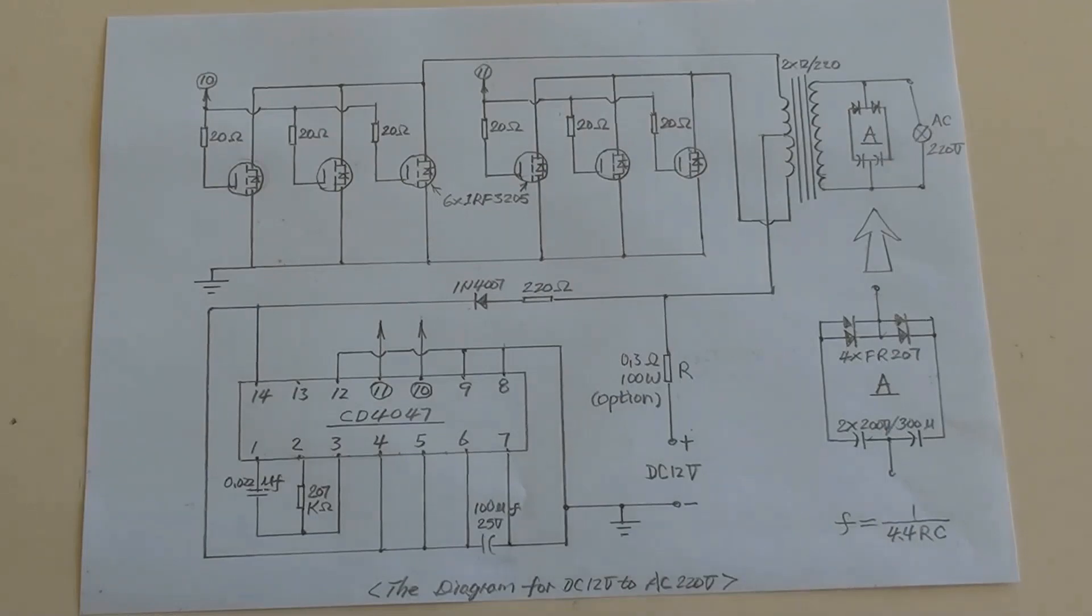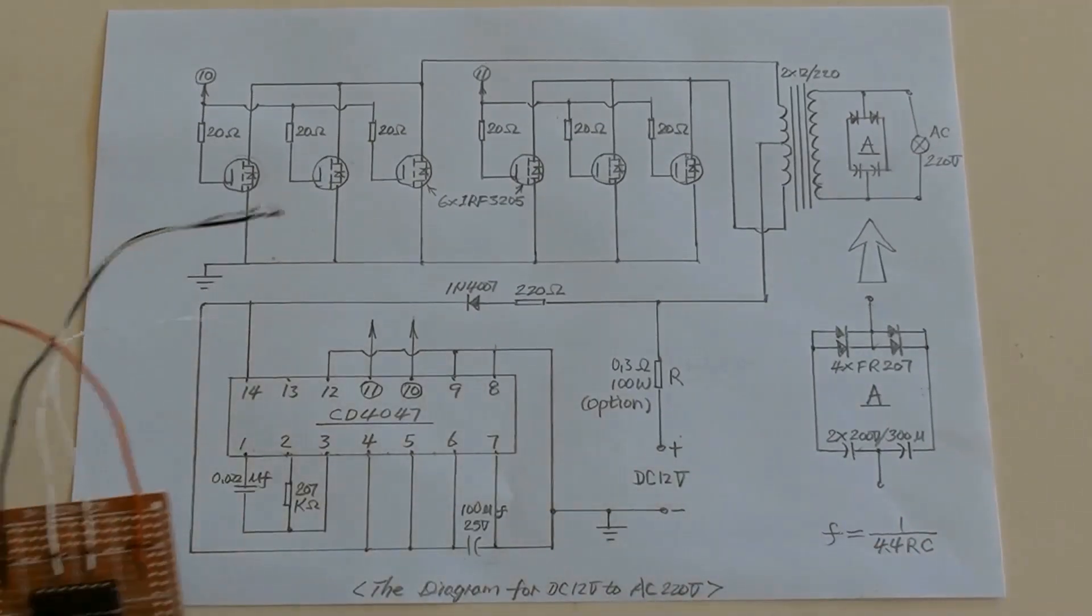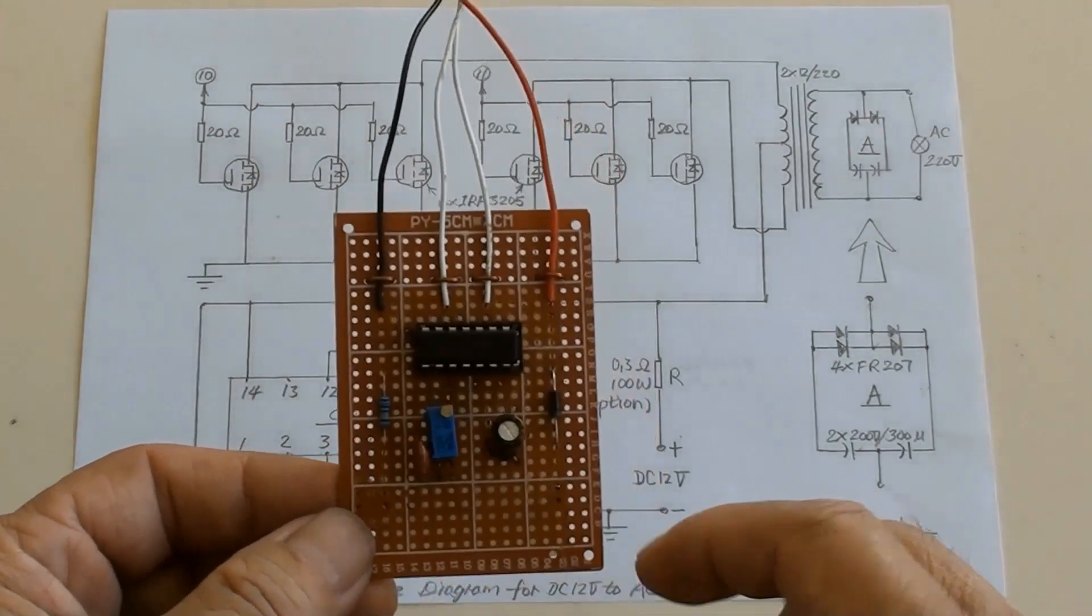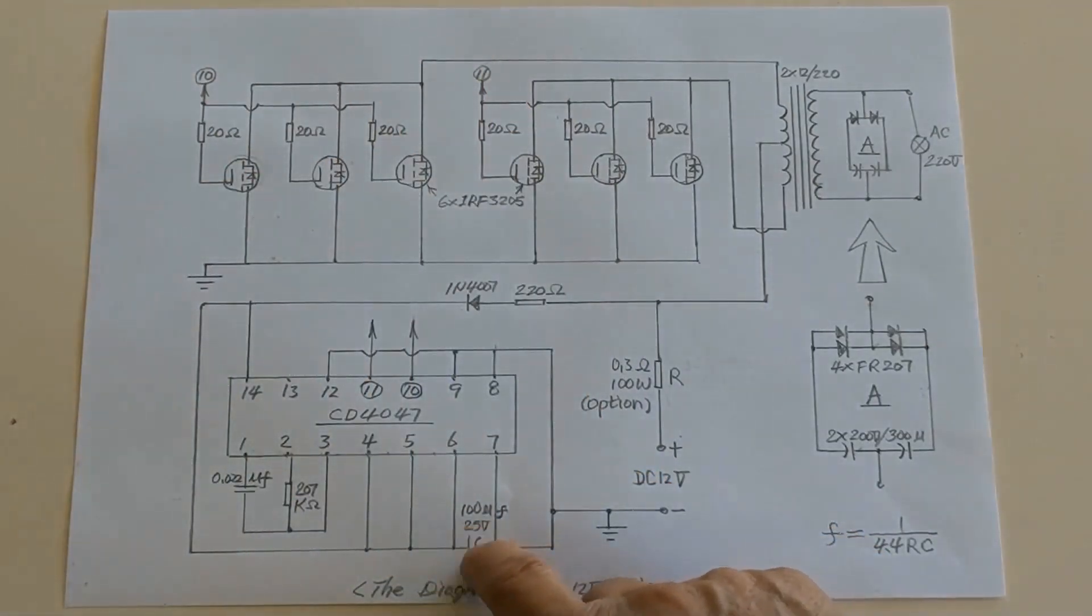F equals 1 over 4.4 times R times C is for frequency calculation formula. This is a capacitor of 100 MUF, 25V, and right here.